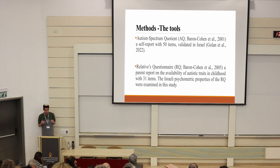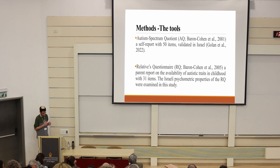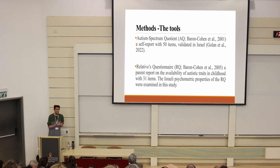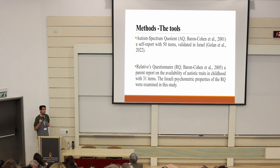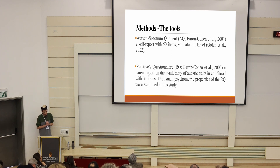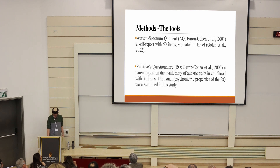The RQ is a parent report on the availability of autistic traits, with 31 items. The RQ checks the current state of autistic traits, while the AQ asks parents about history, developmental gaps, and difficulties in the developmental history. So they're asking different things, and that's important. The RQ had never been checked in Israel, and its Israeli psychometric properties were also examined in this study.